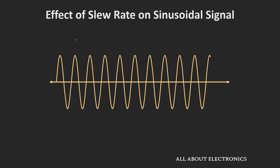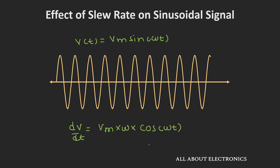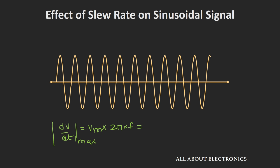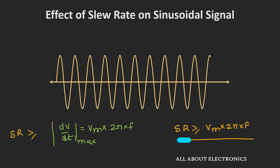For a sine wave expressed as V = Vm·sin(ωt), the rate of change dV/dt equals Vm·ω·cos(ωt). The rate of change is maximum when cos equals 1, so the maximum rate of change is Vm multiplied by 2πf. The slew rate of the op-amp should be at least equal to this maximum rate, meaning slew rate ≥ Vm × 2πf. Whenever the slew rate satisfies this condition, you will not see any distortion in the output.